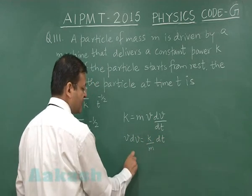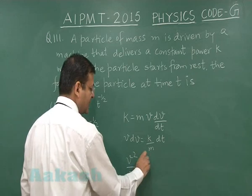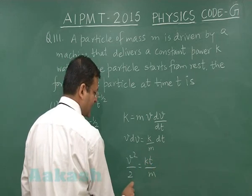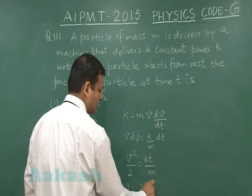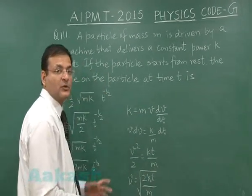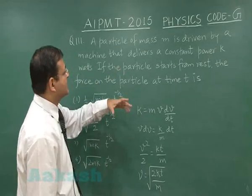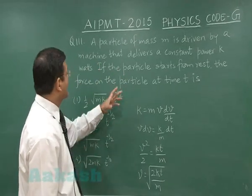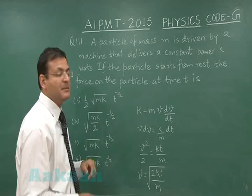If you integrate both sides, you get v squared by 2 equals Kt by m, and v can be written as square root of 2Kt by m. This is the expression of velocity with respect to time. It says it starts from rest and the force on the particle at time t is...